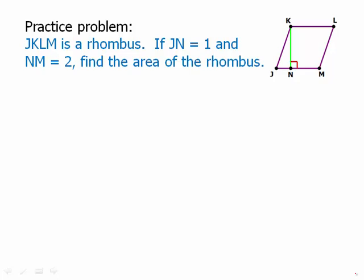If JN equals 1 and NM equals 2, then all the way across from J to M has to be 3. And because it's a rhombus, every side has to have a length of 3.